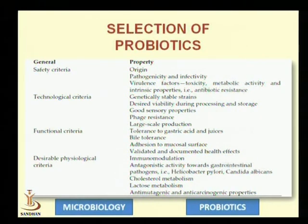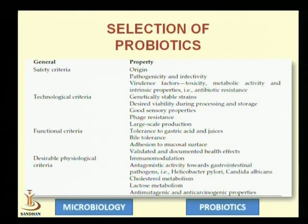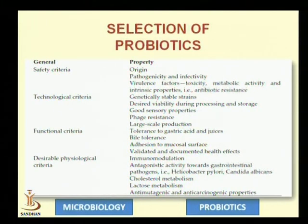For safety criteria: first, the probiotic microorganism should be identified at the species level to know its origin and physiological characteristics; second, it should be non-pathogenic and non-toxic for the human host; third, it should be devoid of virulence factors, particularly antibiotic resistance genes. For technological criteria, the selected microorganism should be genetically stable, remain viable during product processing, and remain viable in adequate amounts throughout the storage period to confer individual health benefits.